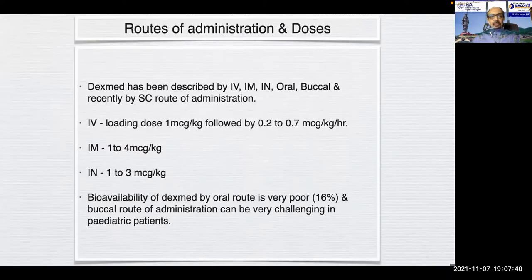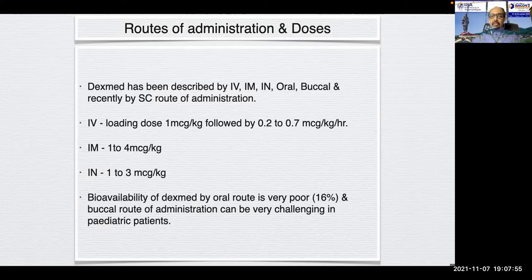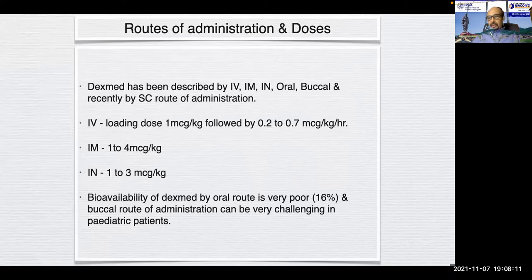Routes of administration: dexmedetomidine has been described by almost all routes — intravenous, intramuscular, intranasal, oral, buccal, and recently subcutaneous. Intravenously, the loading dose is 0.5 to 1 mcg/kg followed by 0.2 to 0.7 mcg/kg/hour as infusion. Intramuscularly it is 1 to 4 mcg/kg. Intranasally it is 1 to 3 mcg/kg. The bioavailability of dexmedetomidine by oral route is very poor — around 16% only — so this route is not recommended.